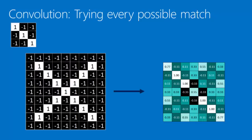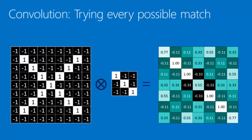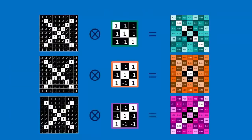Using a shorthand notation with a little X inside a circle to represent convolution — the act of trying every possible match — we repeat that process with other features. This produces a feature map for each filter showing where each feature is most strongly represented across the image.